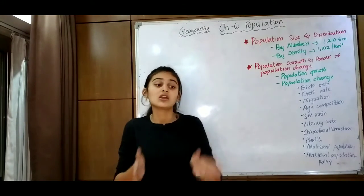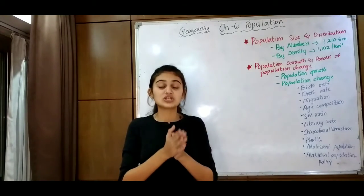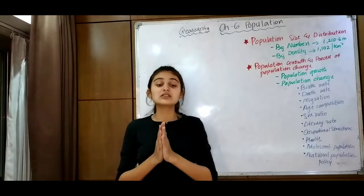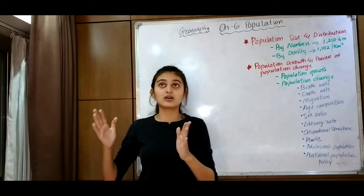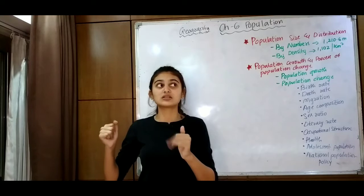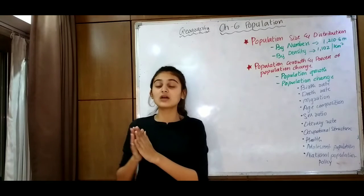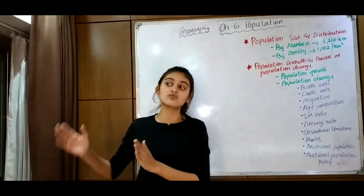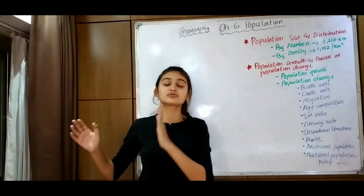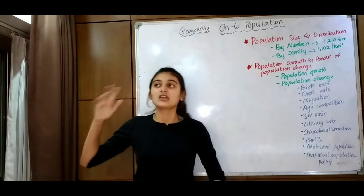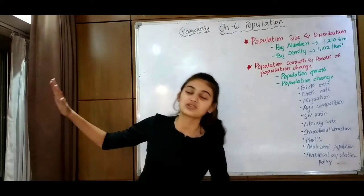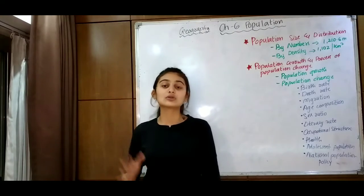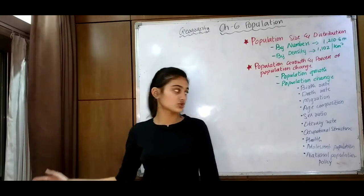Then comes age composition. Age composition refers to children, adults, and senior citizens. Children are classified as below 15 years, adults up to around 36, and the working population is from 36 to 50 years. After 65 years, people are classified as senior citizens. This is what age composition means.